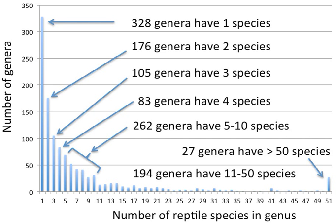The composition of a genus is determined by a taxonomist. The standards for genus classification are not strictly codified, so different authorities often produce different classifications for genera. There are some general practices used, however, including the idea that a newly defined genus should fulfill three criteria to be descriptively useful.